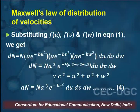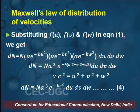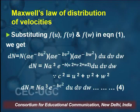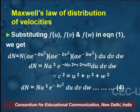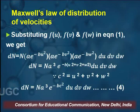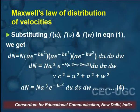Substituting fu, fv, and fw into equation 1, we get: dn = n·(a·e^(-bu²))·(a·e^(-bv²))·(a·e^(-bw²))·du·dv·dw, which gives dn = n·a³·e^(-b(u²+v²+w²))·du·dv·dw. Since c² = u² + v² + w², we get dn = n·a³·e^(-bc²)·du·dv·dw. Call this expression 4.